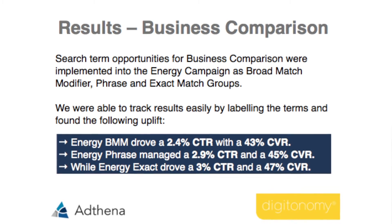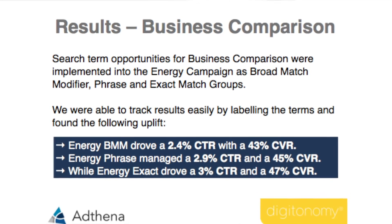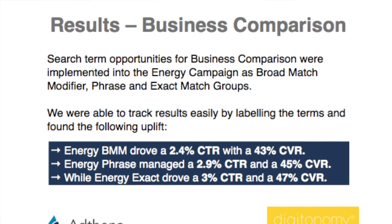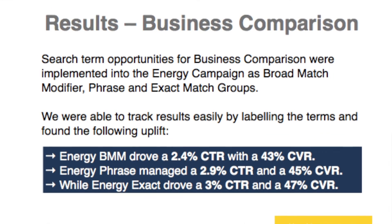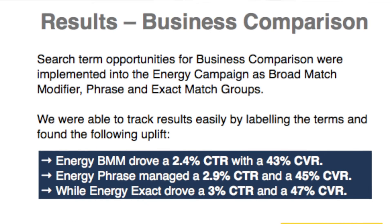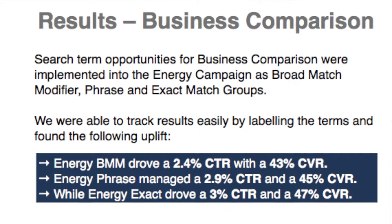Top performing ads by impressions — that's a useful feature for us. For business comparison on the energy channel, we added keywords using Adthena's search term opportunities. We've got a journey that helps businesses compare the best energy prices, whether it's retail or industrial. We used the search term opportunities on energy, added a lot of keywords, pulled out the best converters, and found that conversion rates increased across the whole campaign — a very useful tool for the business comparison site.